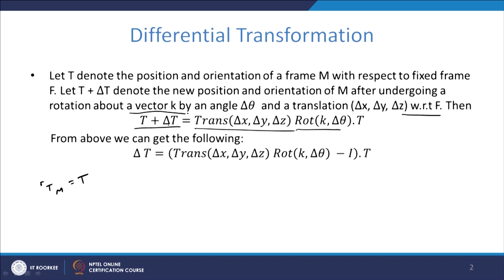Keeping delta T on one side and taking T to the other side, we get delta T — the small change in the translation and rotation orientation of the coordinate frame — given by the translation (delta x, delta y, delta z) into rotation (k, delta theta) minus the identity matrix, multiplied by the homogeneous transformation T.